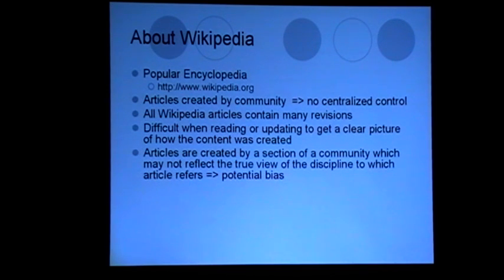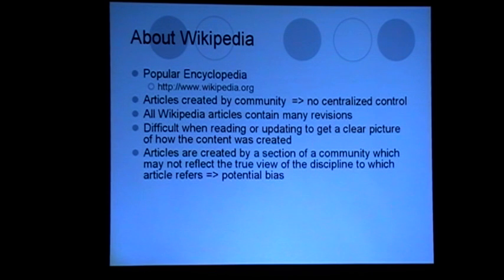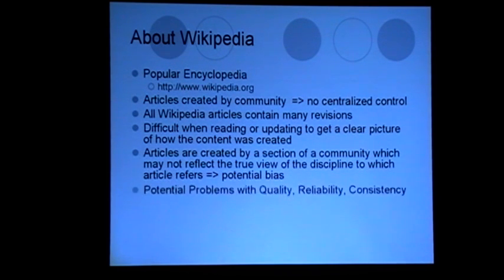The problem with Wikipedia is if a particular section of people who have a particular bias about a topic are the strongest contributors to an article, often the articles will reflect that bias. Wikipedia has a number of tags that allow any user to point out bias that exists in articles, but it can often be the case that the content reflects a specific type of bias. Other problems which people have brought up are the problems of quality, reliability and consistency.